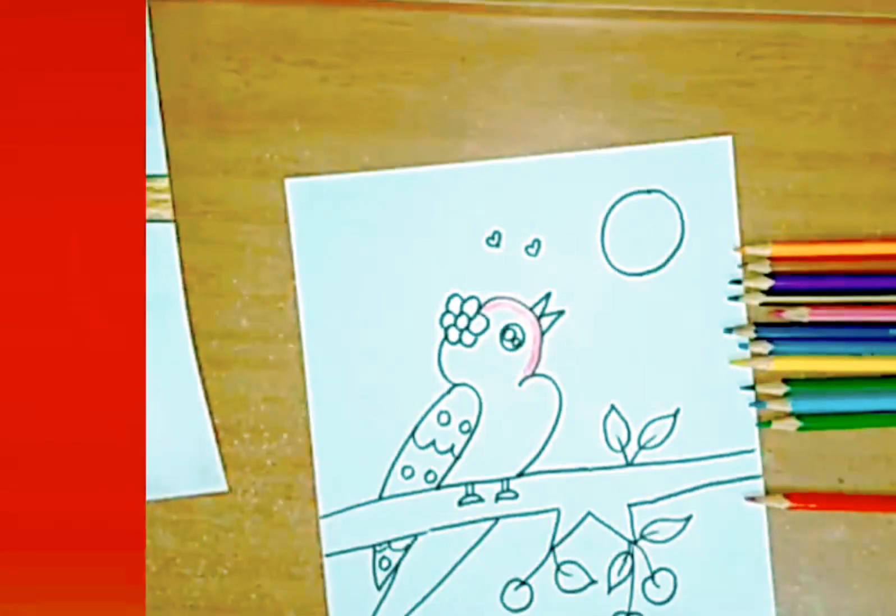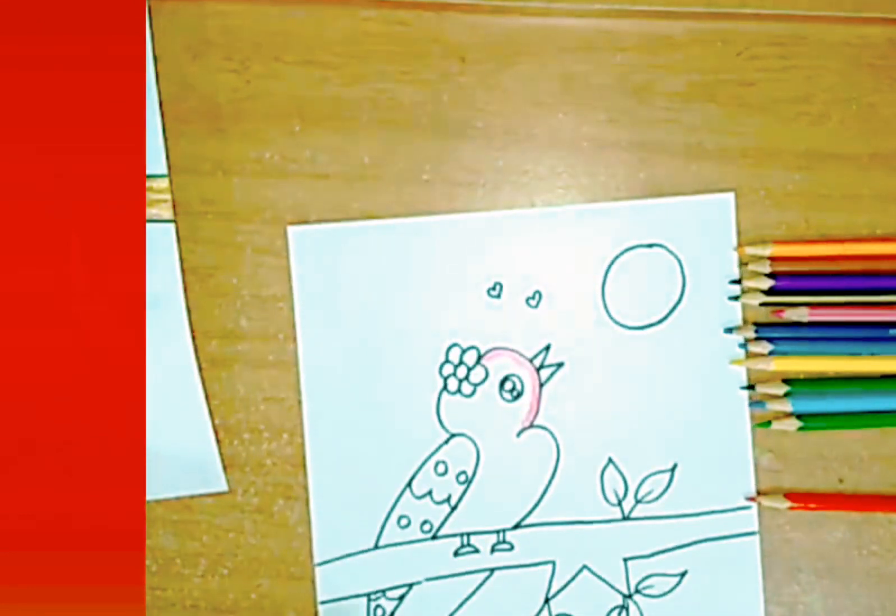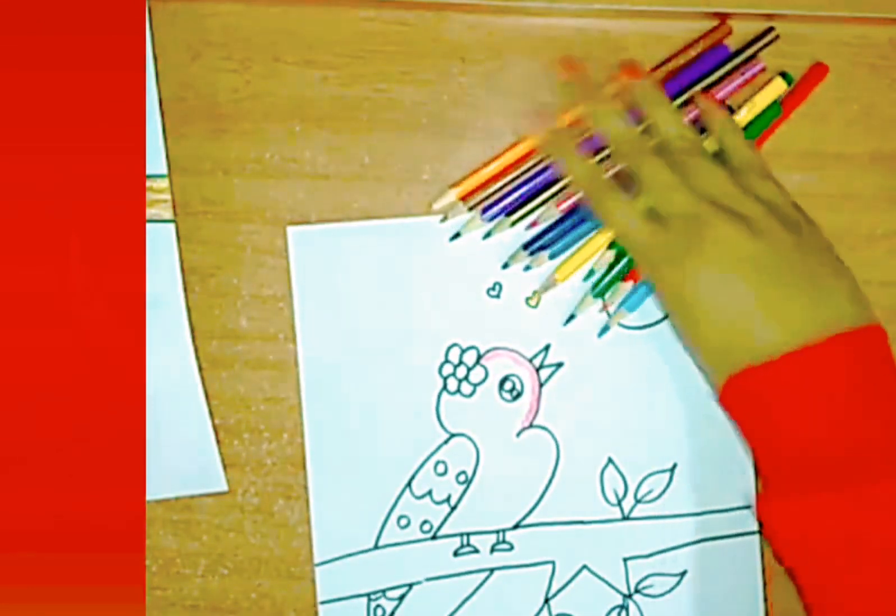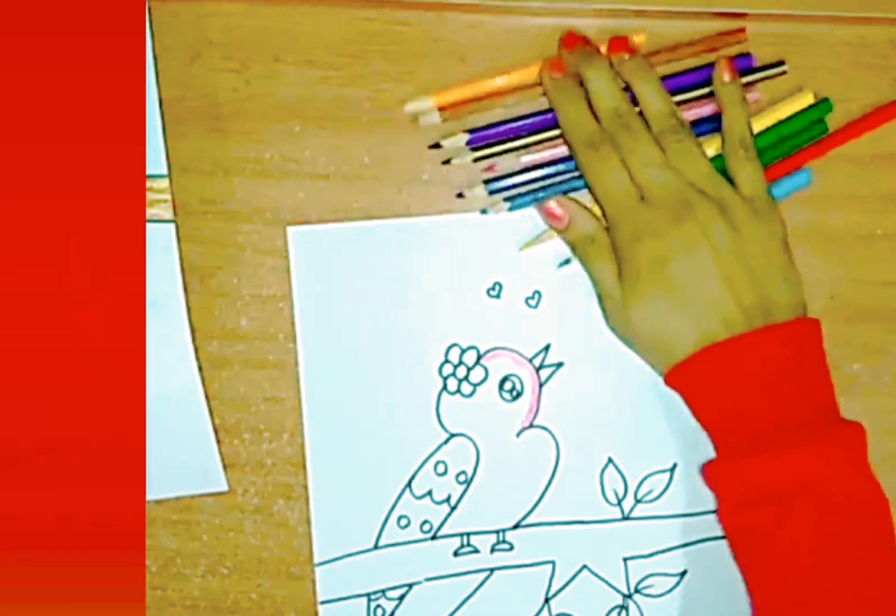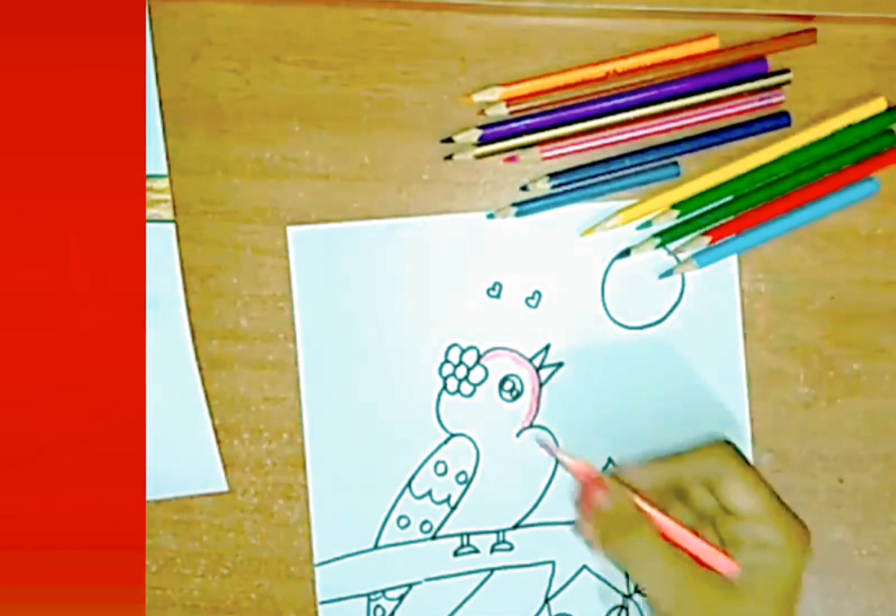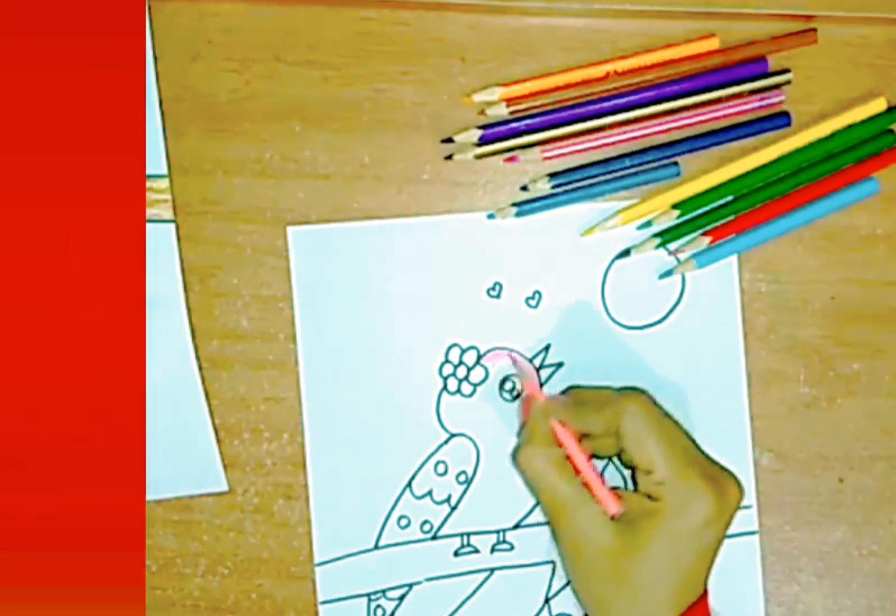Now I color the bird with pink color. First draw the outline and then start filling the colors. Make sure that there are no white gaps while filling the colors.